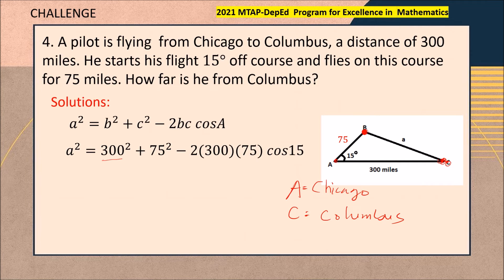In our formula, B is represented as the side opposite angle B, which will be 300, while 75 will be the side opposite angle C, located at Columbus. Following the Law of Cosines formula, we subtract and multiply 300 and 75, then bring down cosine of 15 degrees — the included angle A.